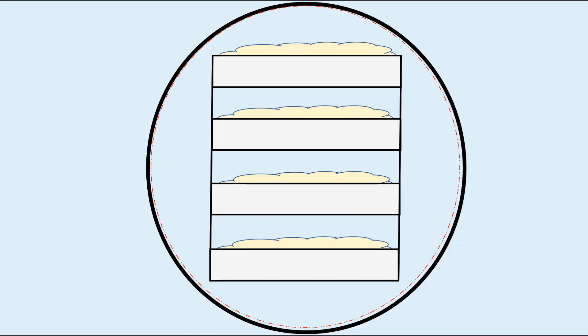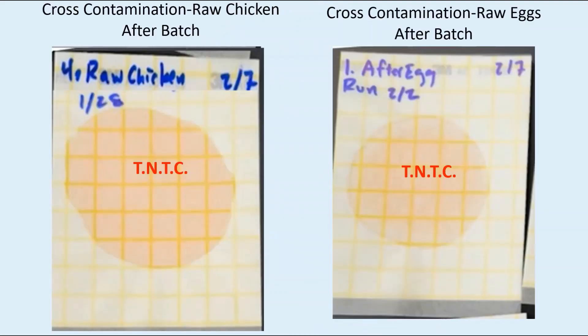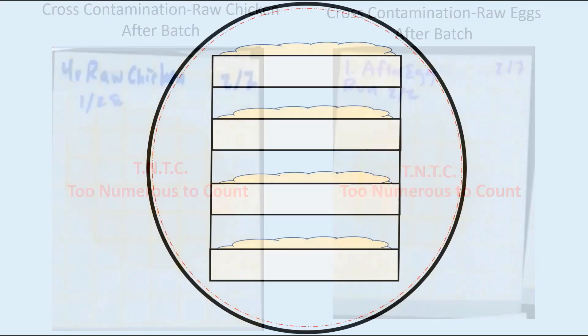The samples were taken to a lab for identification and these are the results. Both the raw chicken and raw eggs were labeled TNTC which stands for too numerous to count. There are so many organisms on the chamber wall it is not possible to count the amount because they're just too numerous. The next test was to see how much of this bacterial medium could leave the chamber wall and come back to the trays.